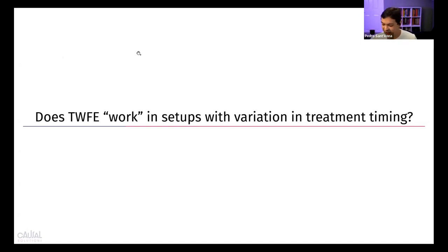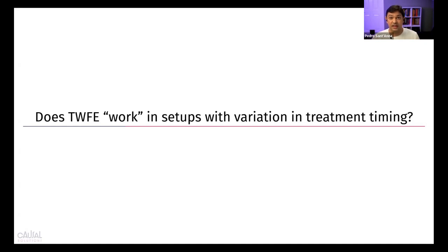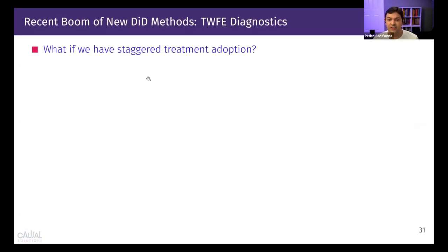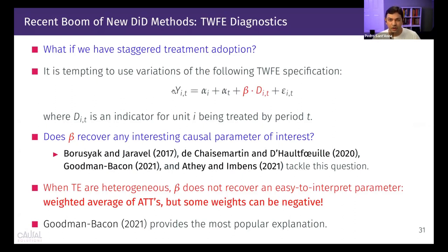We're on time, more or less as I predicted — about two hours for the basics. Now we're in the world of variation in treatment timing. Units are not constrained to the two-period, two-group case anymore. We have several time periods, and units — individuals, firms, states — will enroll in treatment at different points in time. It's very tempting to jump ahead and extrapolate from our basic two-way fixed effects regression to this more general situation.